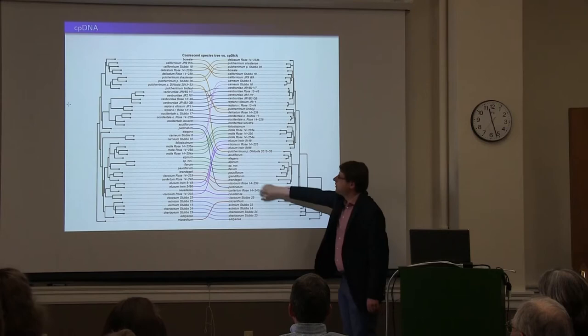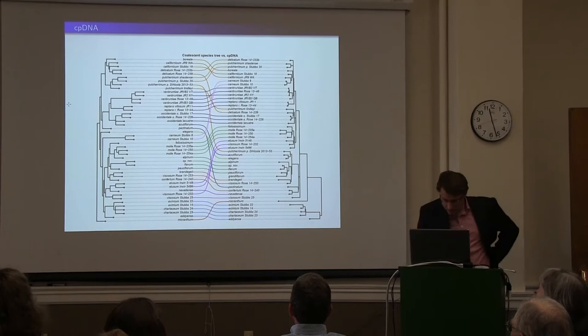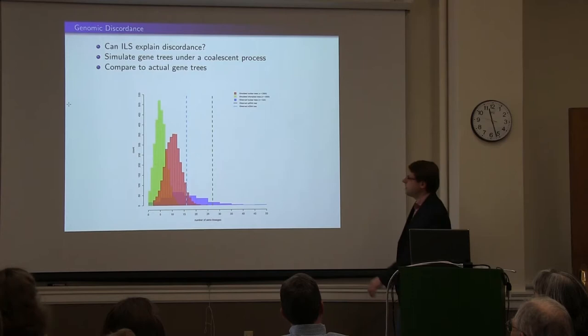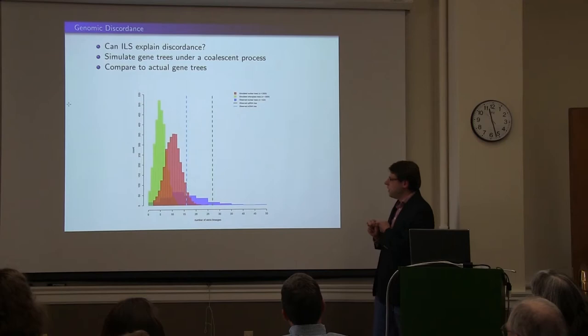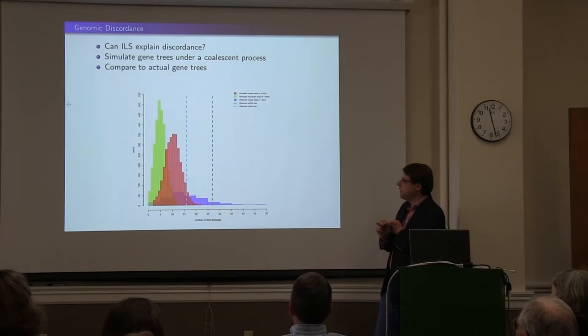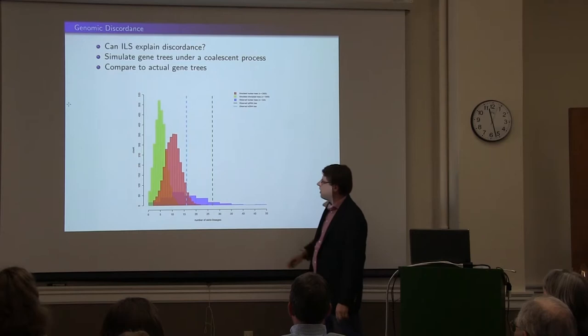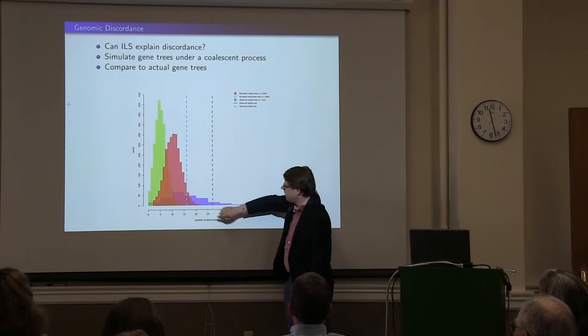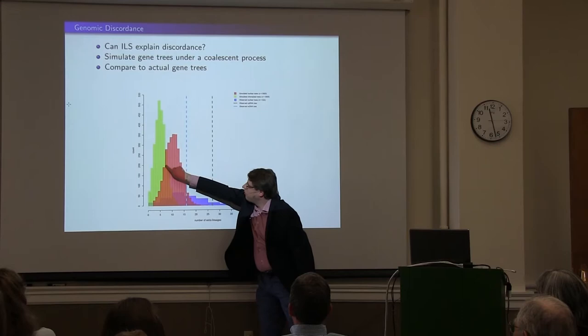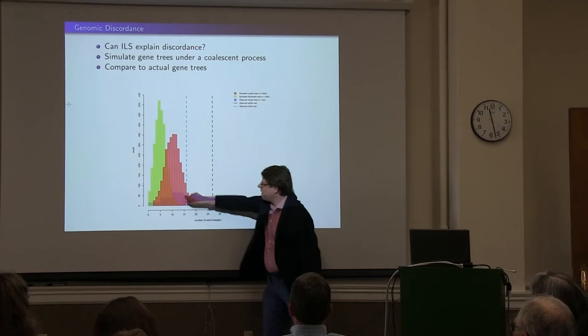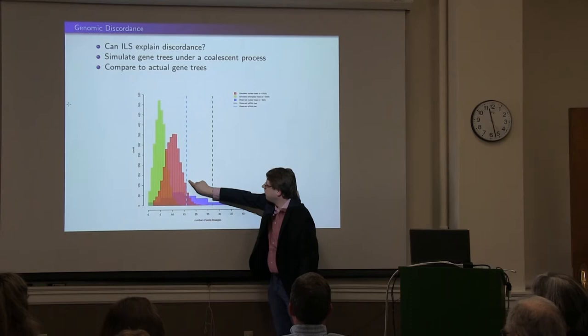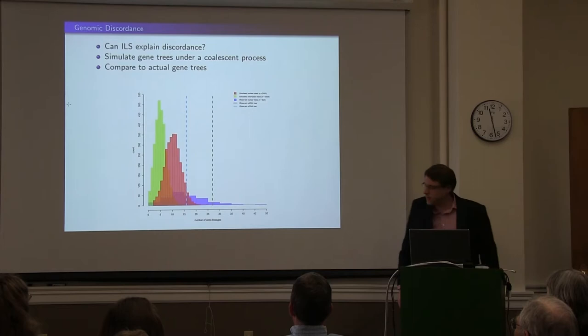The amount of discordance is further illustrated in a tanglegram. One thing we want to ask is: can incomplete lineage sorting explain the discordance between these gene trees and the species tree? To test that, we can simulate gene trees under a coalescent process given our nuclear species tree, then compare the distribution of expected gene trees to our observed distribution. You can see the nuclear ribosomal is in the lower tail of what we'd expect from the nuclear genome, but the chloroplast is way out there in terms of the amount of discordance we'd expect. We do see some evidence for hybridization adding extra discordance in our nuclear ribosomal gene tree — we had the pulcherrimum lineage and elegans lineage with a reticulation event, and we see elegans nested in pulcherrimum; and we had exchange between elusum and carneum, and we see carneum nested in the elusum clade. Two of our three reticulation events show up in the nuclear ribosomal.